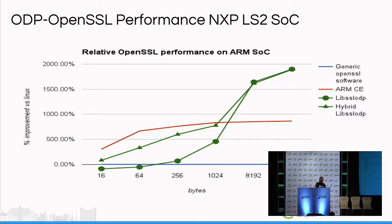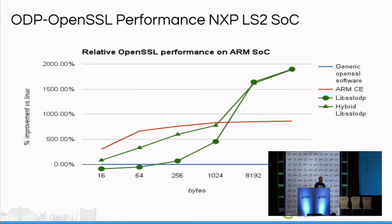There is still a gap between ARM crypto extension and the hybrid approach for small size packets because of engine overhead, which we are optimizing. But for large packet sizes we can see a huge gap in performance between ARM crypto extension and the hardware accelerator. This will be beneficial for platforms having crypto acceleration, and most of the cores will be free for the rest of the processing. We'll be demonstrating this performance tomorrow in the demo sessions as well.